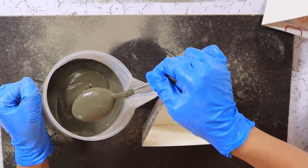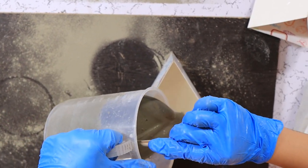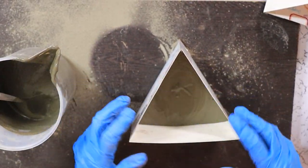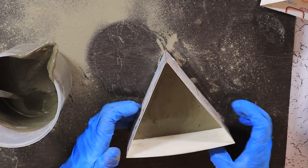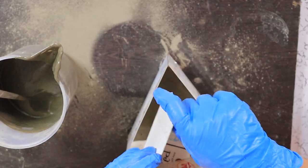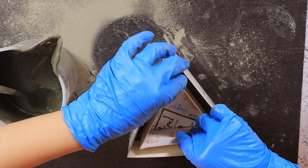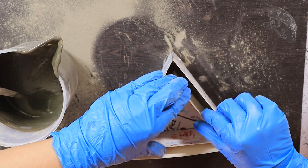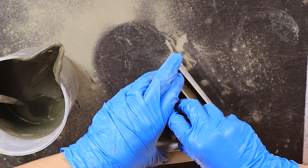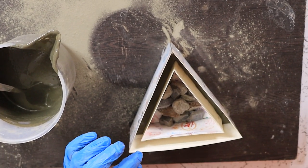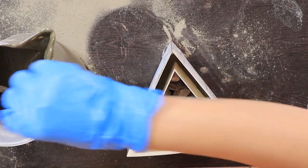We want a consistency that is like pancake batter. Now we are going to pour. Tap it to release the air bubbles. Then we are going to pop this inside and fill it with some pebbles so that it won't come back up. Keep it in the center and fill the rest.